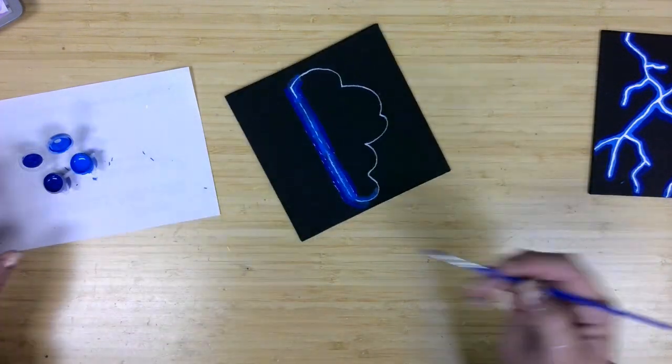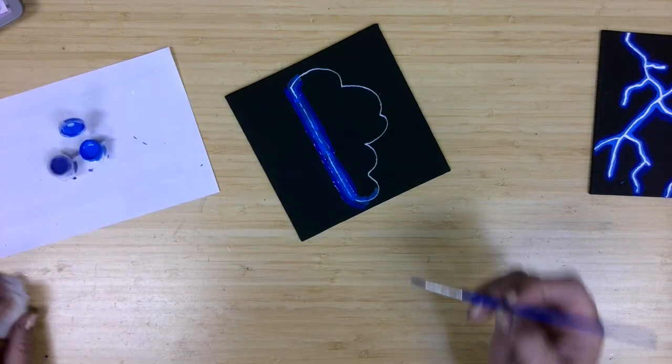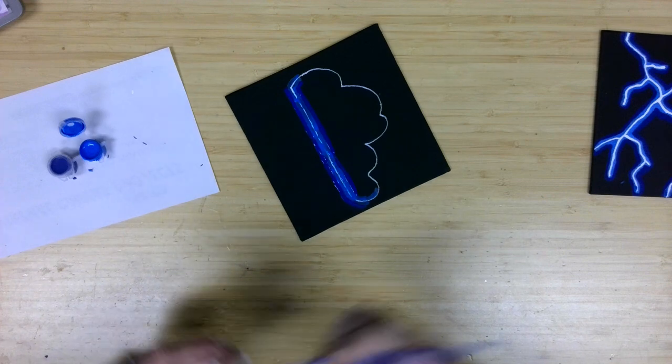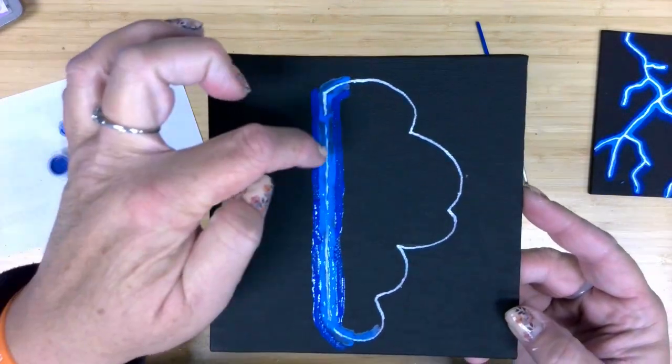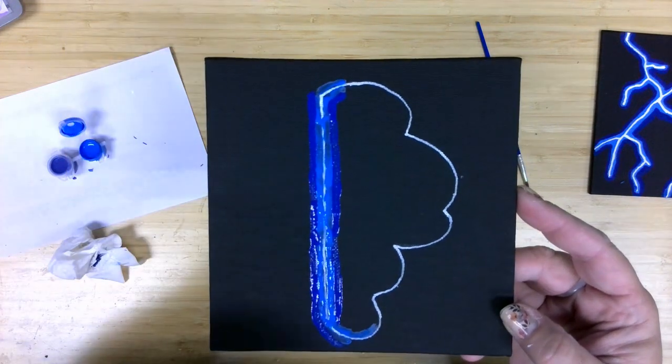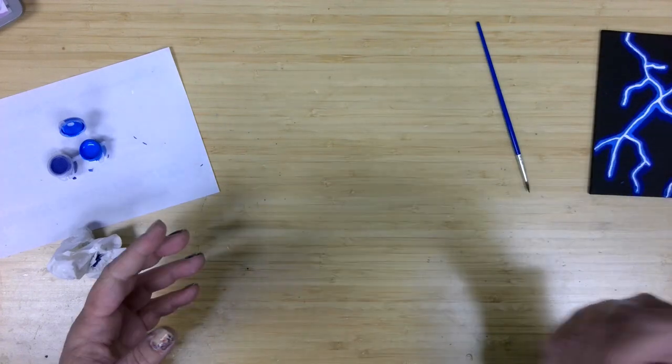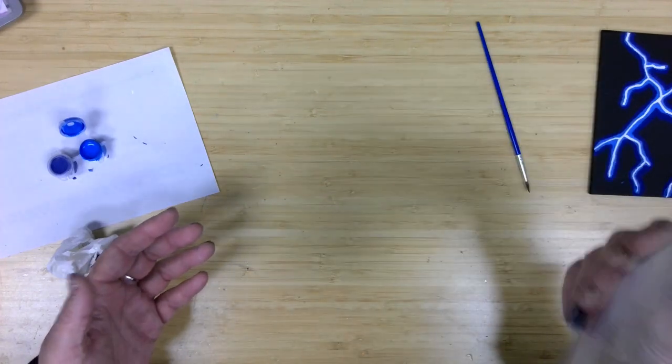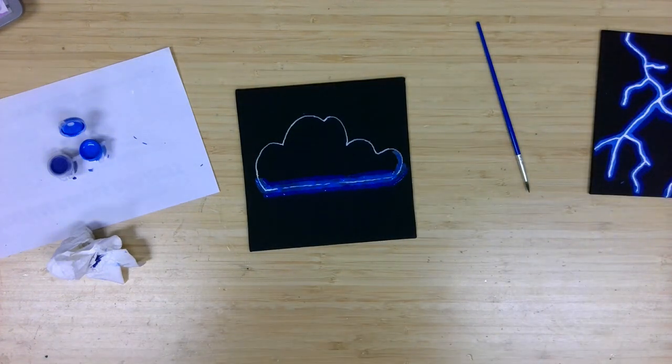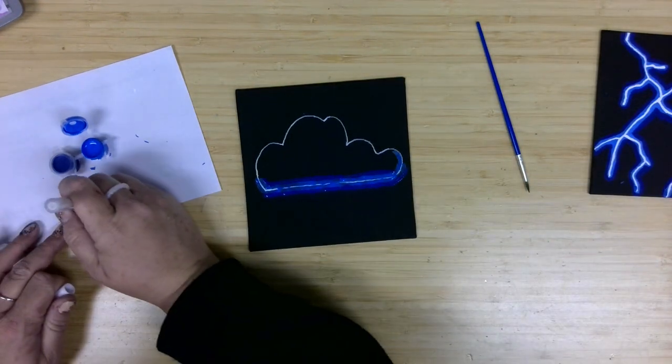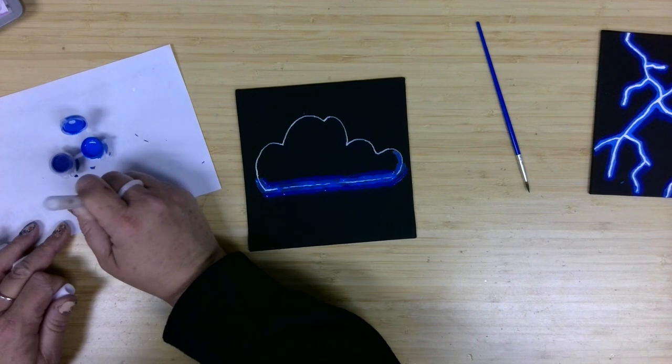All right. And as my neon dries, I will come back through and give that definitely some extra layers because I can see right around there, I can see black canvas through. Same over here. But with it not super dry, I'm going to be doing nothing more than moving paint around if I try to go through it right now or go back over it again right now.